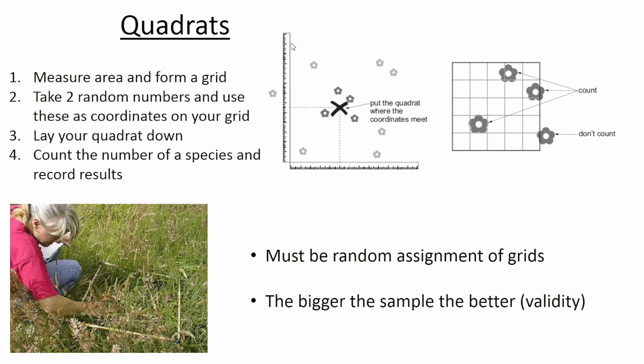So if it was a 10 by 10 meter area, you would do every meter maybe as one square. If you had a meter by meter quadrat that would be your square, so you'd have a 10 by 10 grid. When you have your grid, you then take two random numbers and use these as coordinates on the grid.